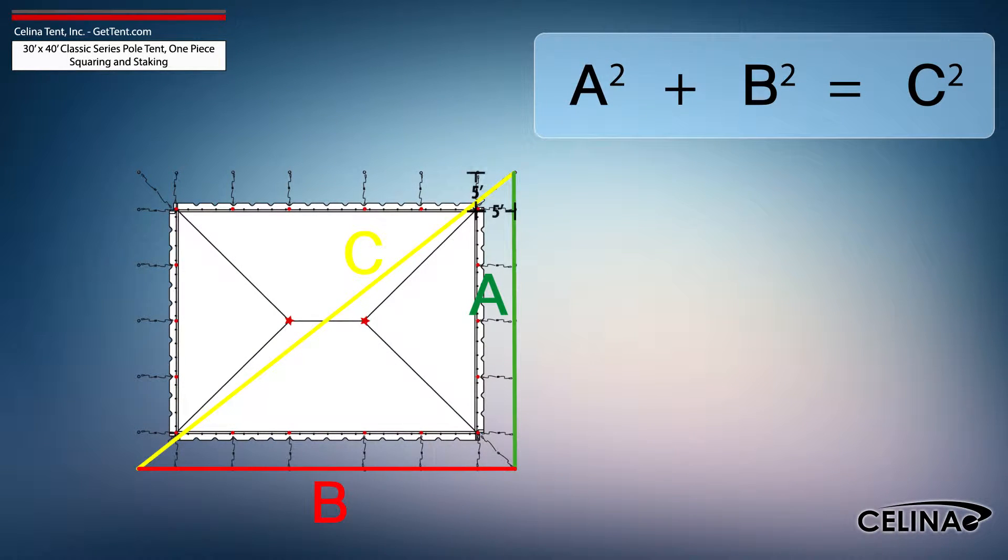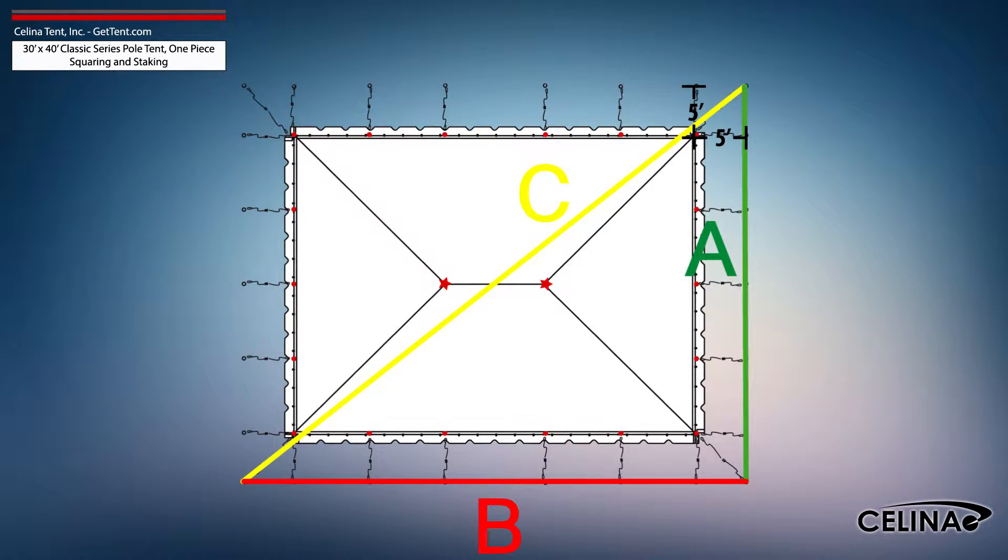Using the Pythagorean theorem and adjusting out for 5-foot staking, the entire tent footprint will be 40-foot by 50-foot with a 64-foot diagonal length.